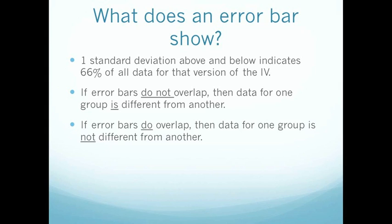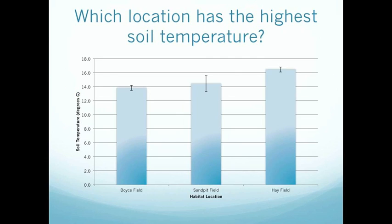Let's have a look at this with some examples. This is the graph from the Excel table that was created in the Excel tutorial. As you can see, Boyce field is represented by the bar on the left, Sandpit field in the middle, and Hayfield on the right. This is a graph of soil temperature in degrees centigrade versus the habitat location.